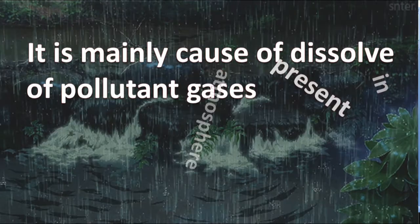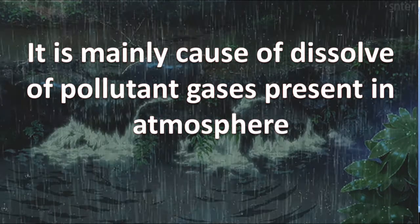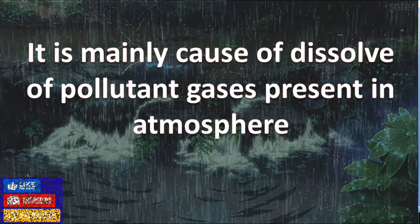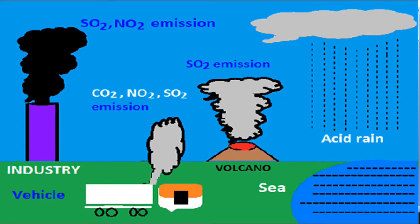It is mainly caused by the dissolving of pollutant gases present in the atmosphere. Gases like sulfur dioxide, nitrogen dioxide, carbon dioxide, or various oxides of nitrogen, sulfur, and carbon — emitted from industries, vehicles, and volcanoes — are the main cause of acid rain.